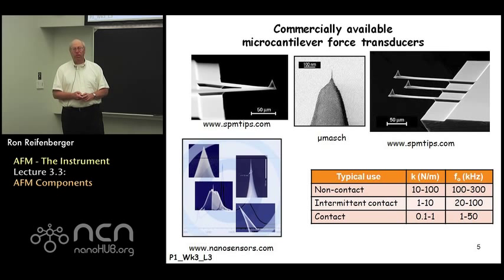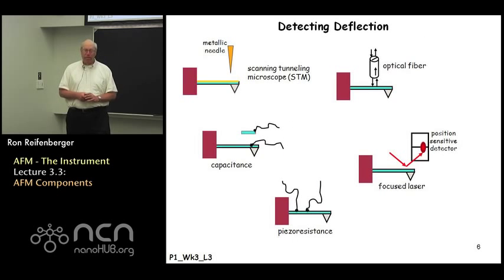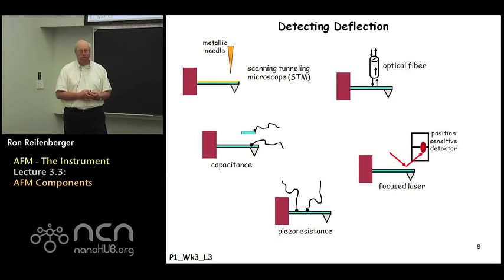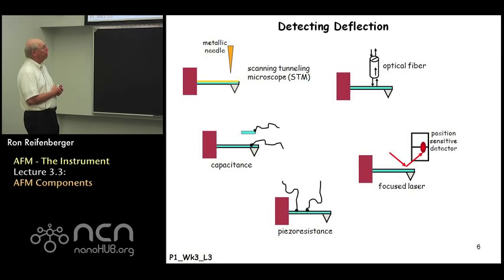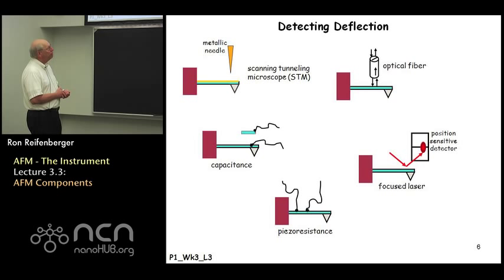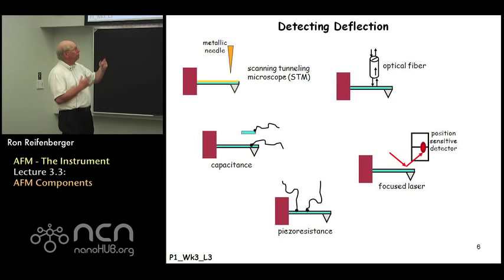The cantilever is the restoring spring in the atomic force microscope. It then becomes important to be able to detect the deflection of that spring, and a variety of techniques have been proposed to do that. Of these approaches, the one using a focused laser beam reflecting onto a position-sensitive photodetector is by far the one that has achieved the most use. A lot of our discussion in the remainder of this course will be designed to understand the physics and optics associated with that focused laser means of detecting the deflection of the cantilever.